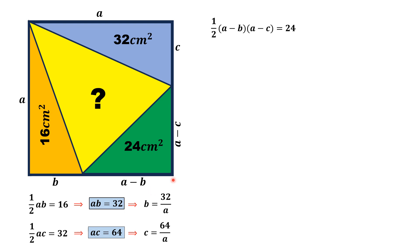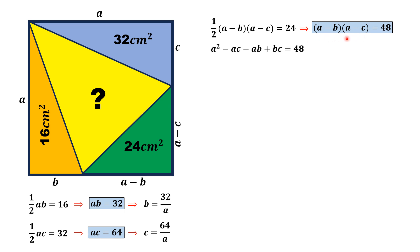Now we consider the green triangle. The area of this green triangle is equal to half times (a minus B) times (a minus C), which equals 24. Multiplying both sides by 2 we get (a minus B)(a minus C) = 48. Expanding this gives a² minus aC minus aB plus BC = 48.